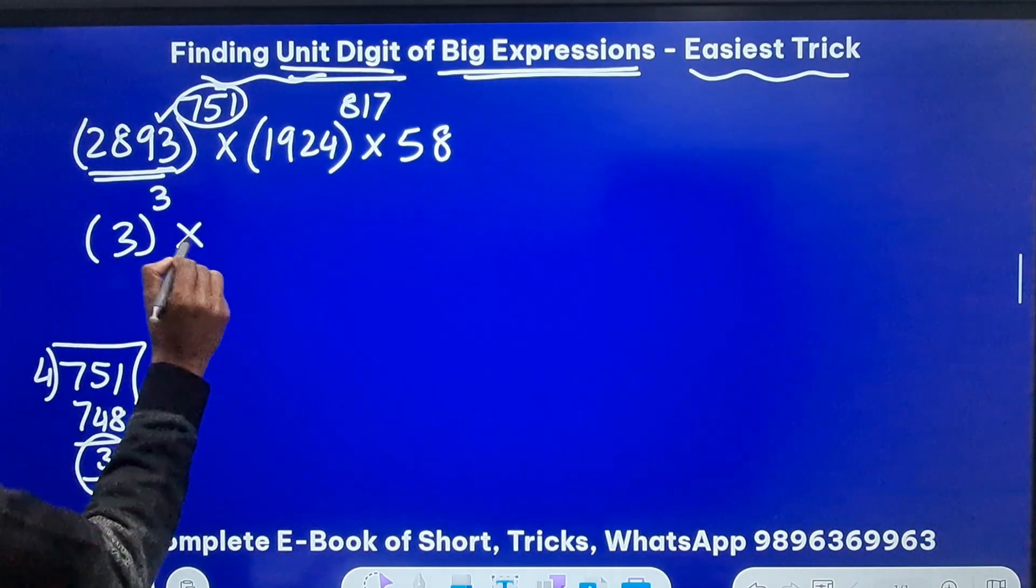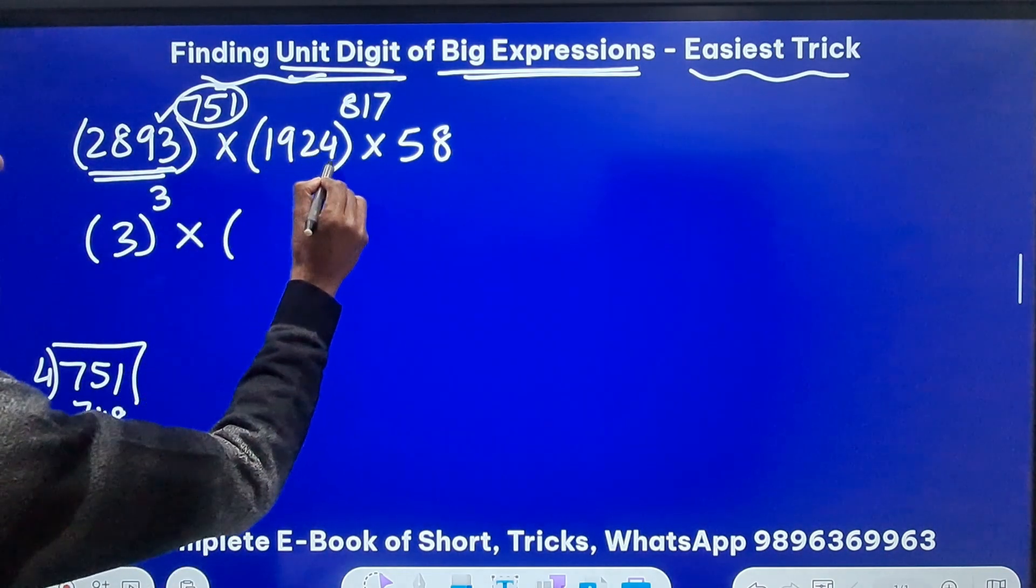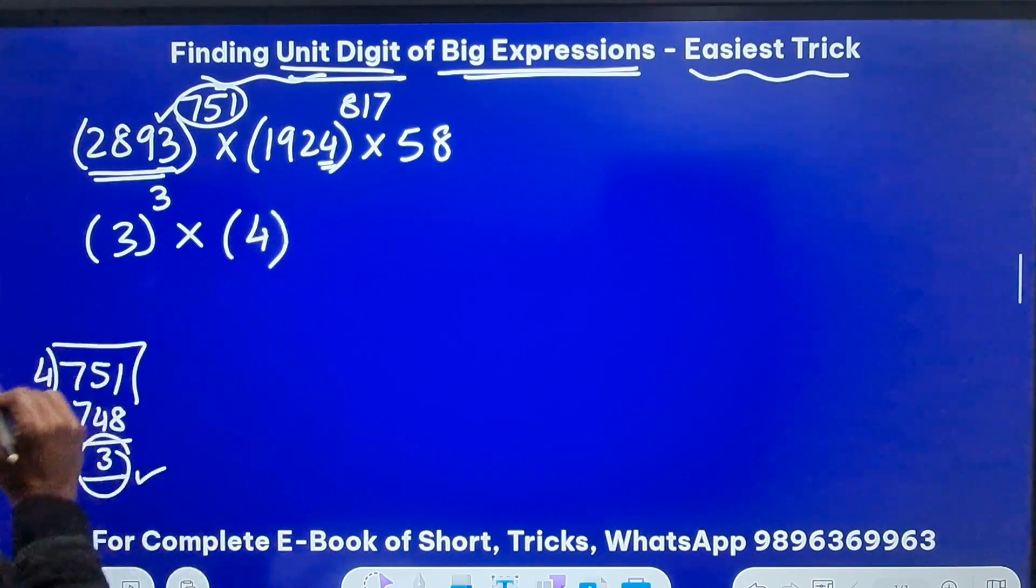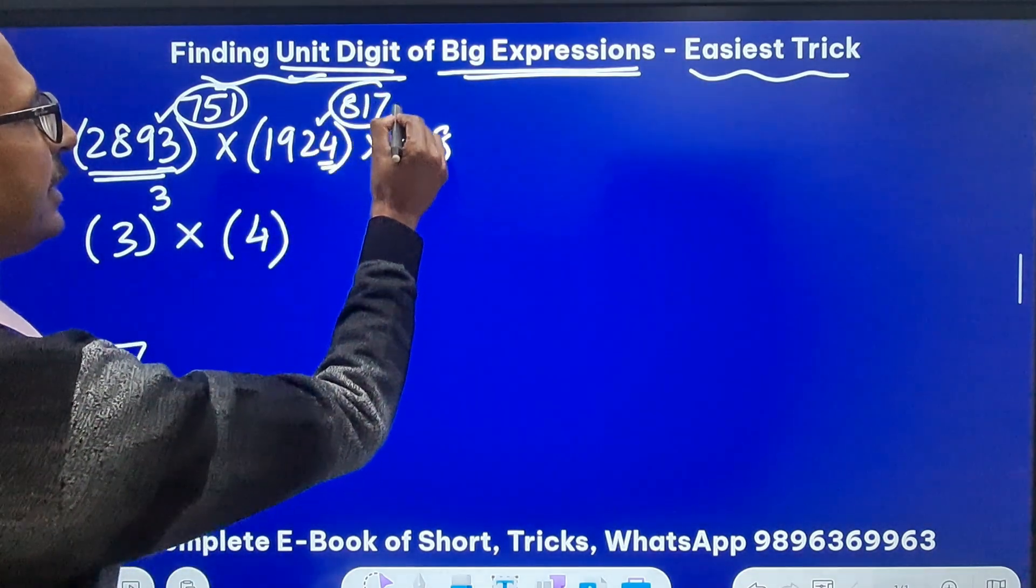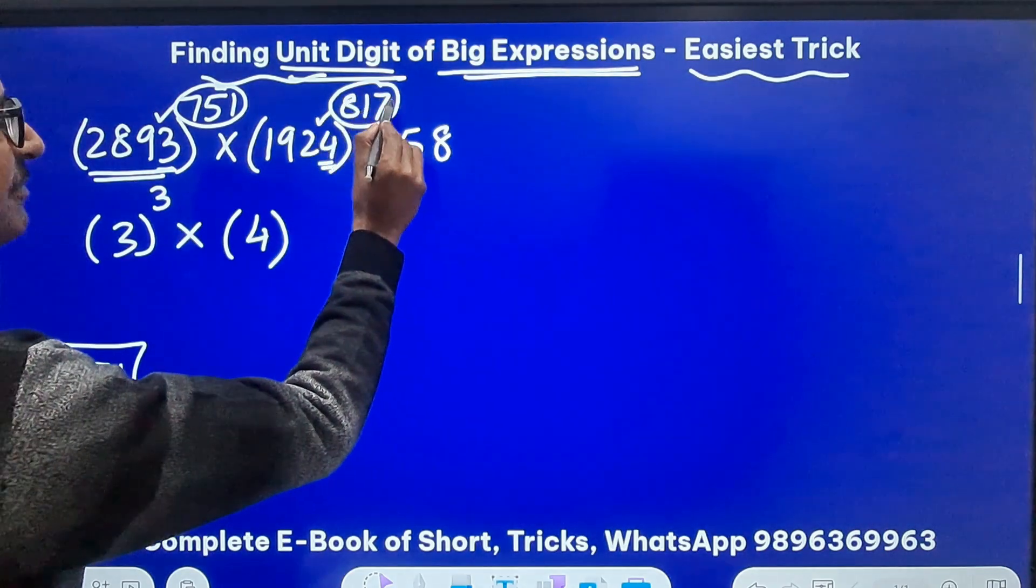Now come to the second part. Here we have the unit digit as 4 so I will just write 4 and now look at this exponent it is 817.